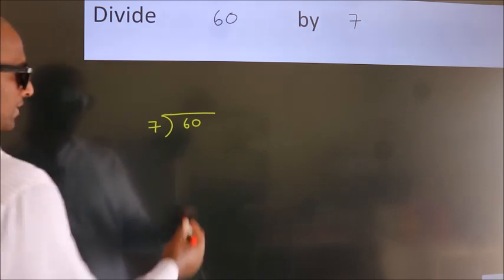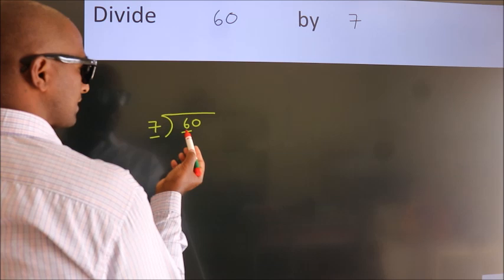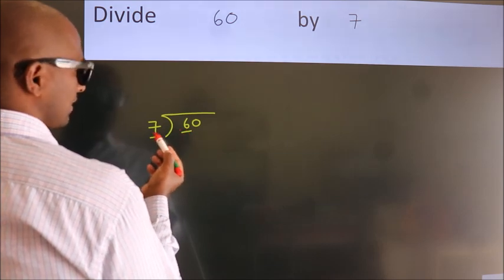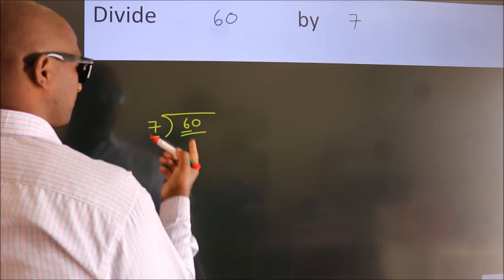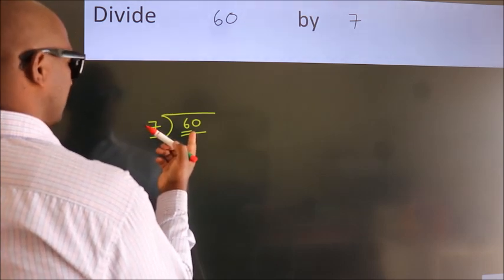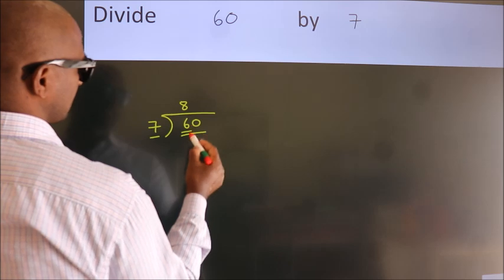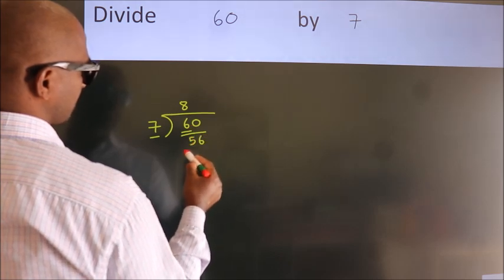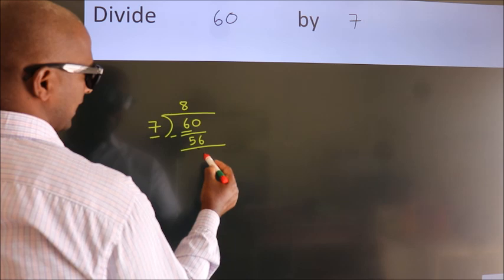Next. Here we have 6. Here 7. 6 smaller than 7. So we should take two numbers, 60. A number close to 60 in 7 table is 7, 8, 56. Now we should subtract. We get 4.